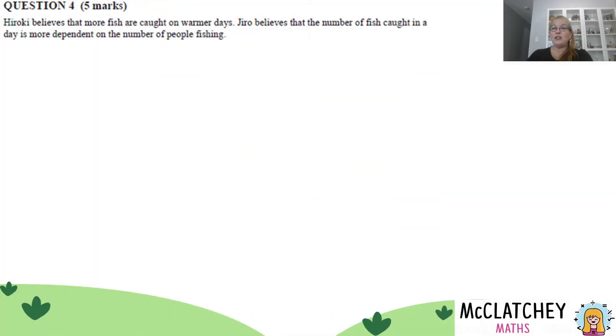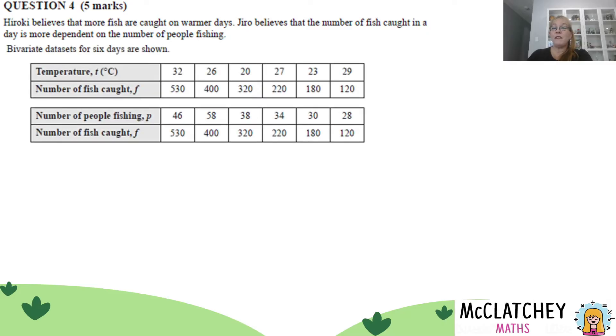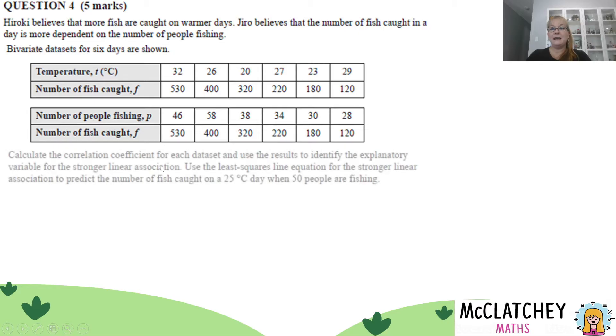Let's get right into question four. It's worth five marks. Hiroki believes that more fish are caught on warmer days. Jiro believes that the number of fish caught in a day is more dependent on the number of people fishing. Bivariate data sets for six days are shown. We've got one here with temperature and the number of fish caught, and one here with the number of people fishing and the number of fish caught. Let's get into this first and find out what they want us to do.